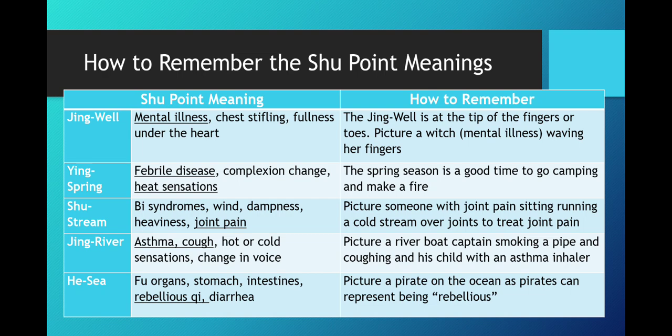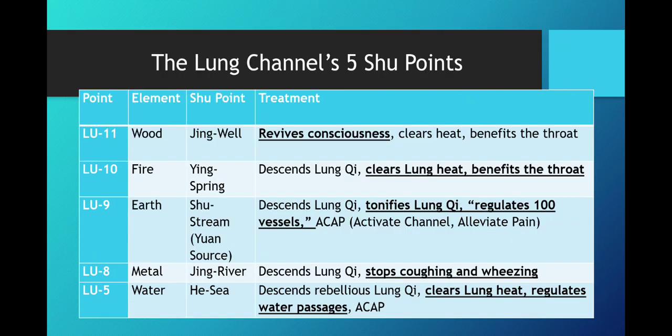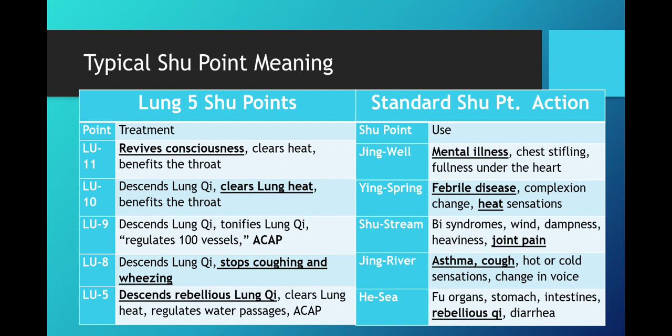The last one is the He Sea point. This one treats the fu organs — stomach, intestines — rebellious qi, and diarrhea. For this one you can picture a pirate on the ocean, as pirates can easily represent being rebellious.